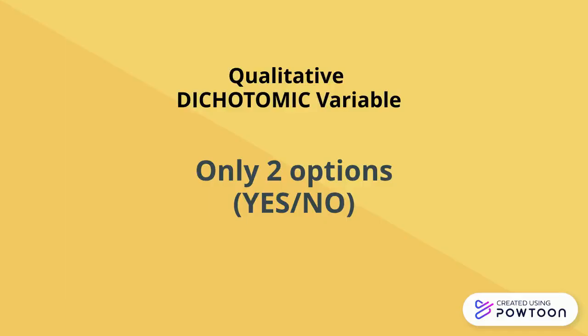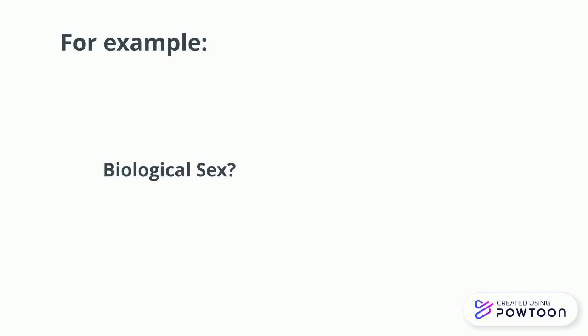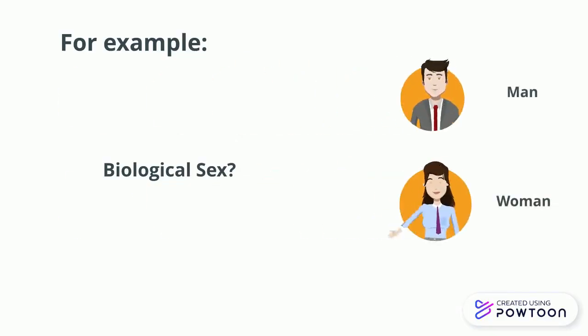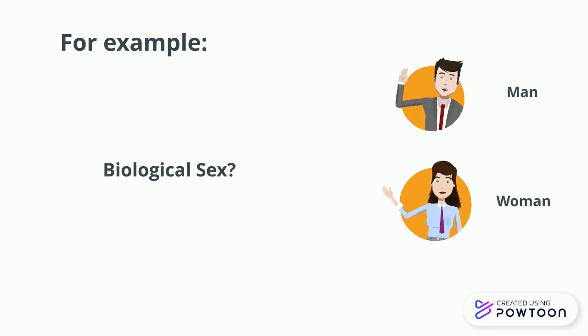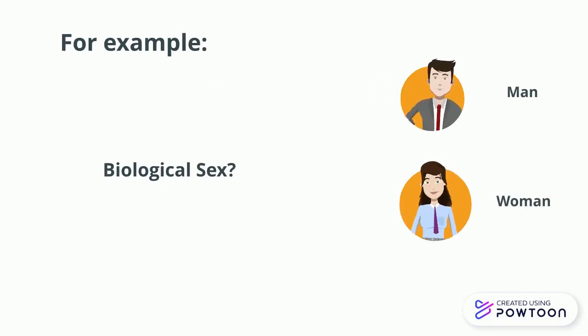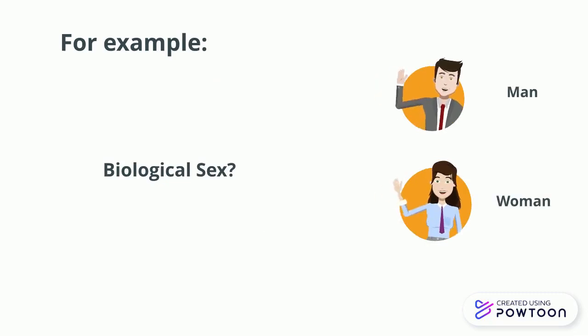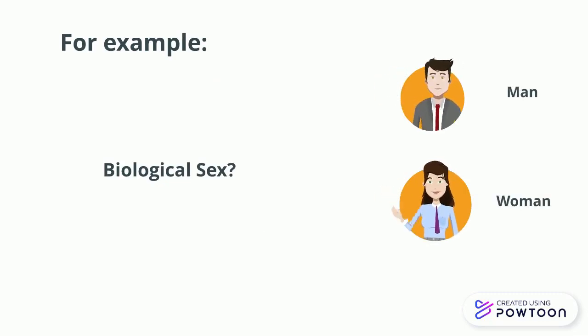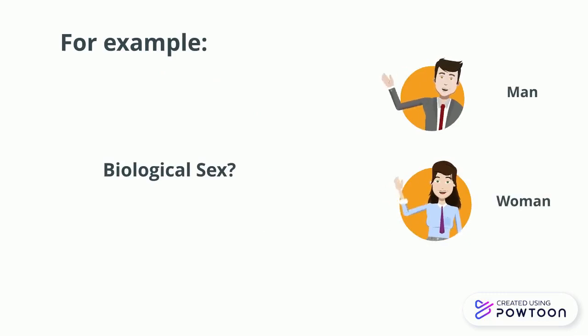A dichotomic variable is a type of qualitative variable with only two options — for example, yes or no. A common example is biological sex: normally, epidemiological studies classify subjects as men or women.